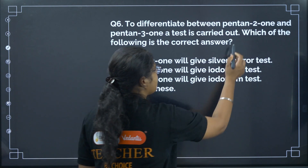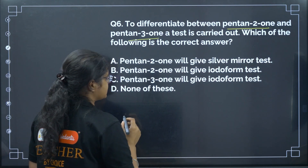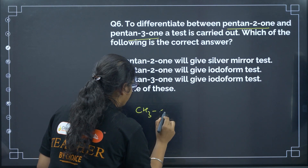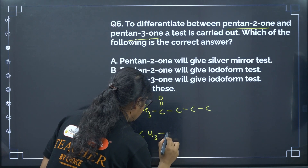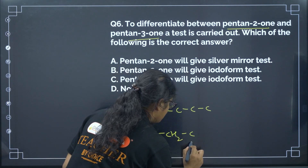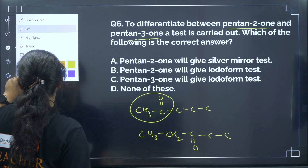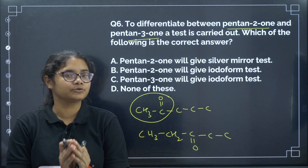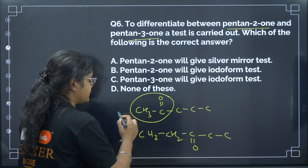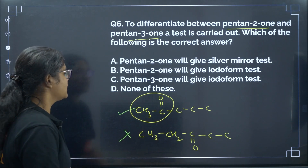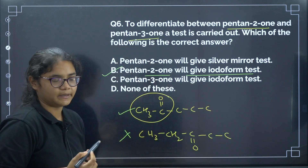Next: to differentiate between pentan-2-one and pentan-3-one, which test is used? Pentan-2-one has a CH3-CO- group, which will show a positive iodoform test giving a yellow precipitate. Pentan-3-one does not have this group and will not show the iodoform test. So pentan-2-one gives a positive iodoform test. Correct answer: option B.